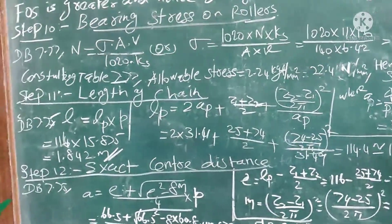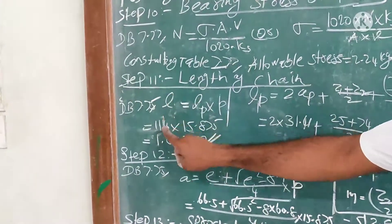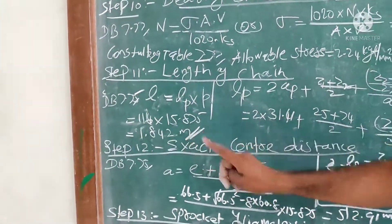We take the next higher even number of links, that is 116. Now take this number of links, 116, multiplied by pitch, you get the total length of the chain as 1.842 meter.